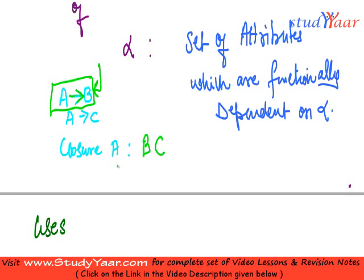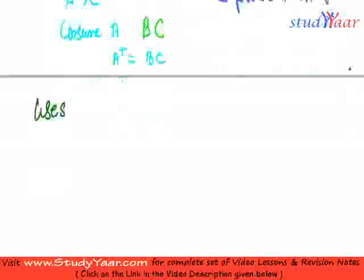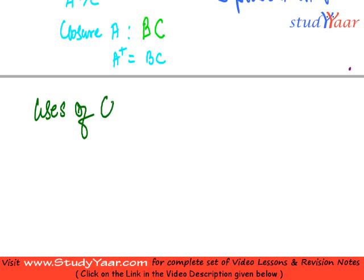So what is my alpha plus? My alpha plus is, or rather A plus is BC. So that is the concept of a closure of an attribute set. So I am just now concentrating on uses of closure of an attribute set.